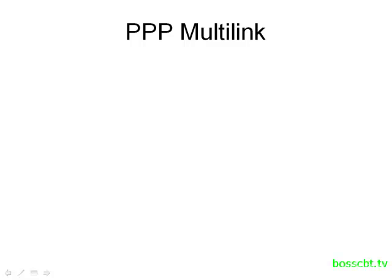Hello and welcome to this tutorial. We're going to talk about PPP multi-link. Multi-link is just another way to say load balancing. So far we've looked at OSPF and EIGRP and how they can balance traffic to a single destination over multiple paths. Since those are layer 3 routing protocols, all of the load balancing occurred at layer 3 of the OSI model.